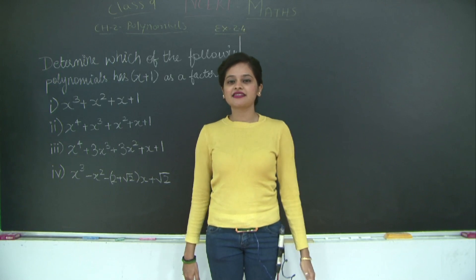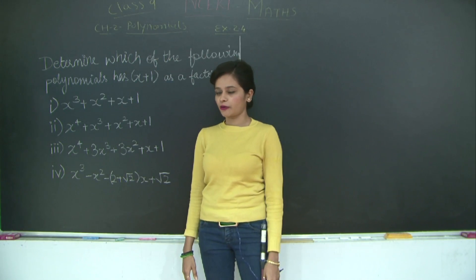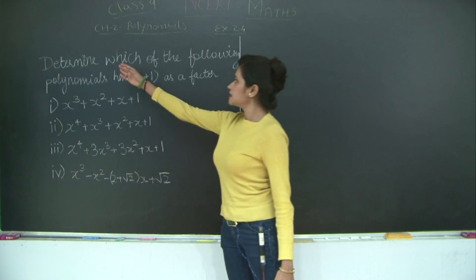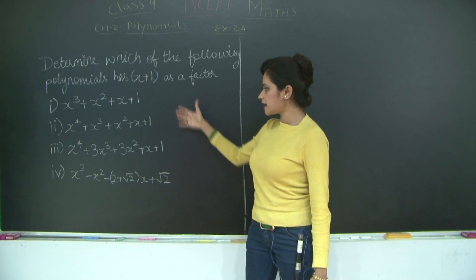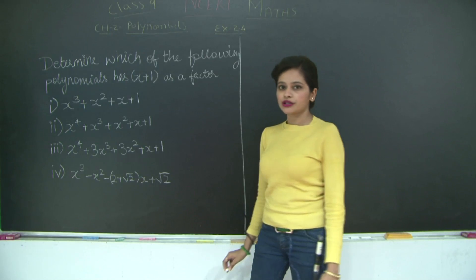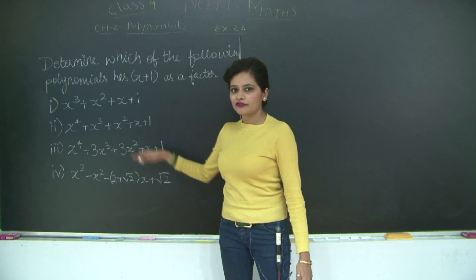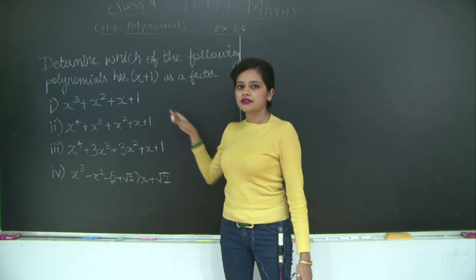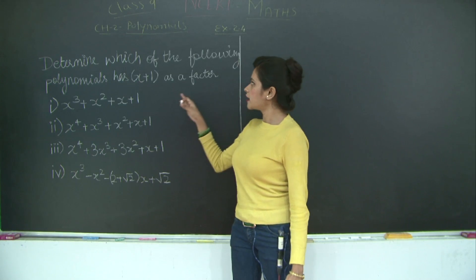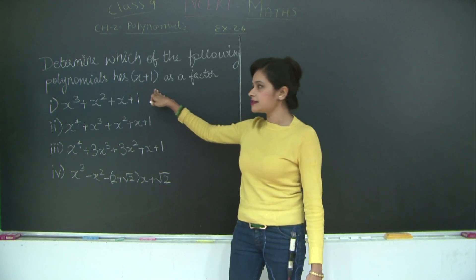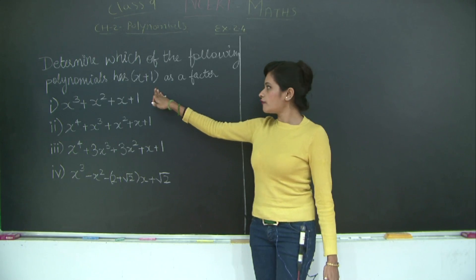Welcome back students. Let's start with exercise 2.4 of polynomials, which is based on factorization of polynomials. We'll look at the first question: determine which of the following polynomials has x plus 1 as a factor. We will substitute the zero of x plus 1 into each polynomial. If the answer is 0, then x plus 1 is a factor. Let us first find the zero of x plus 1.